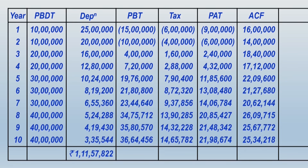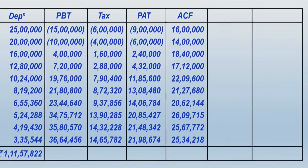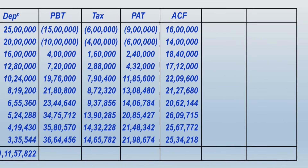Two more columns are yet to be presented in this table: one is the column of PV factor and another will be the present value of these annual cash flows. Make sure you have given enough space for those two additional columns.